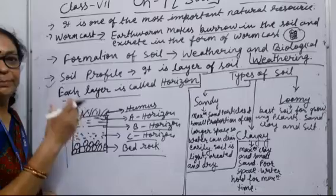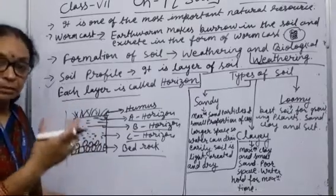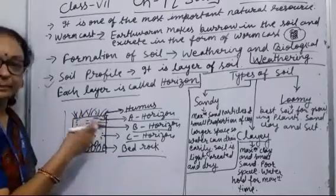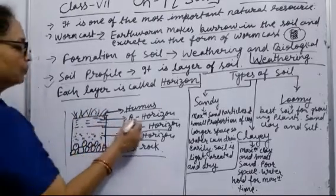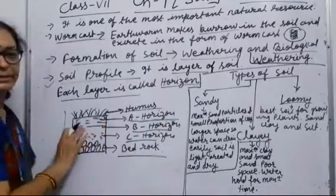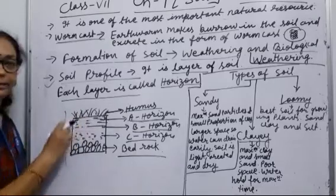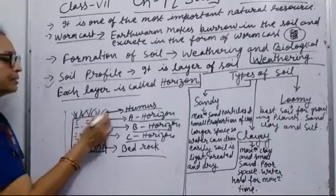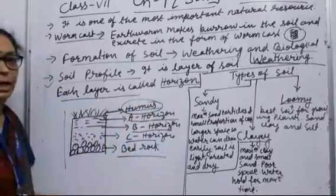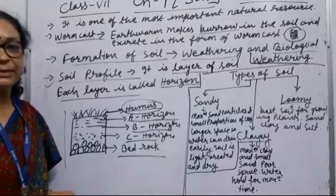It is not very important for plant growth. Now the most important horizon is A. In this region, mostly plants grow with their roots and nutrients.